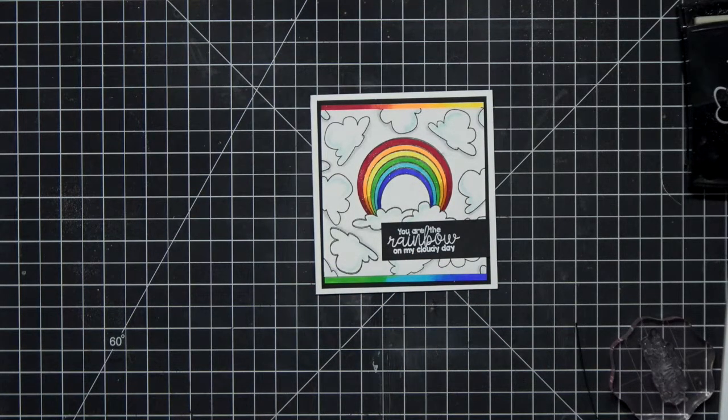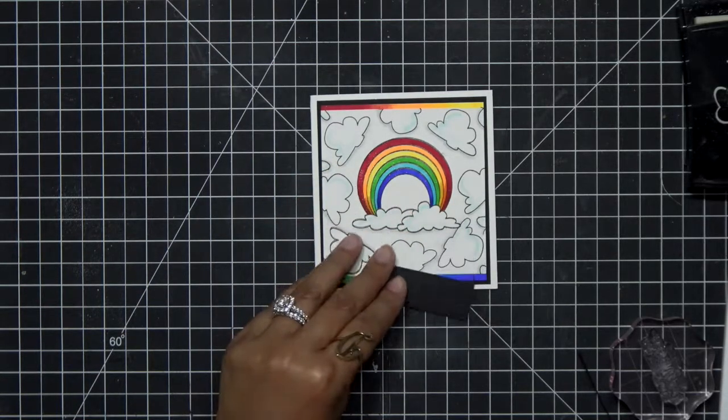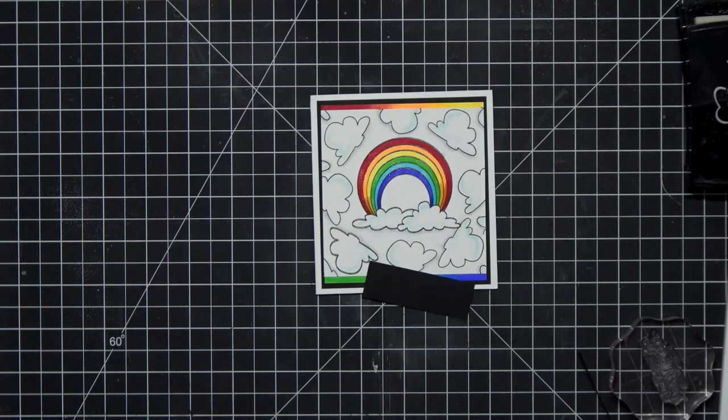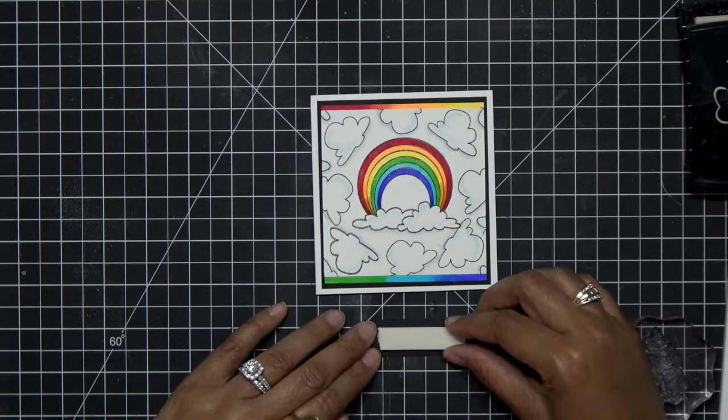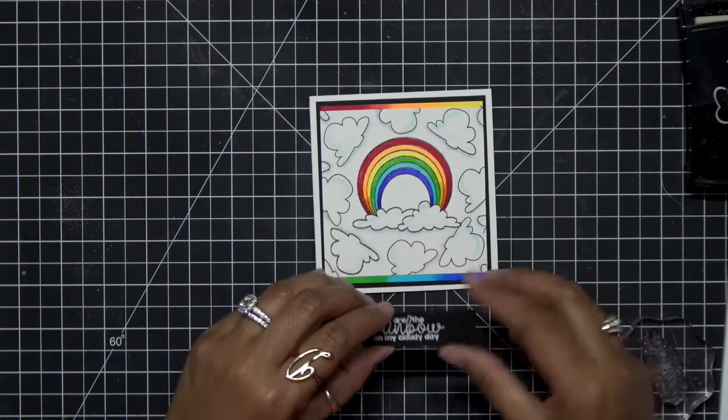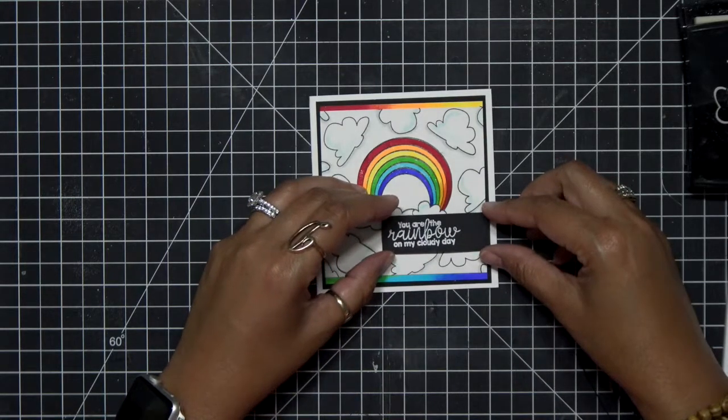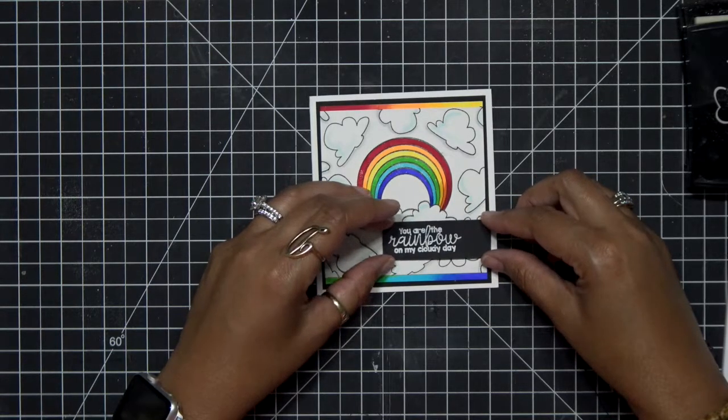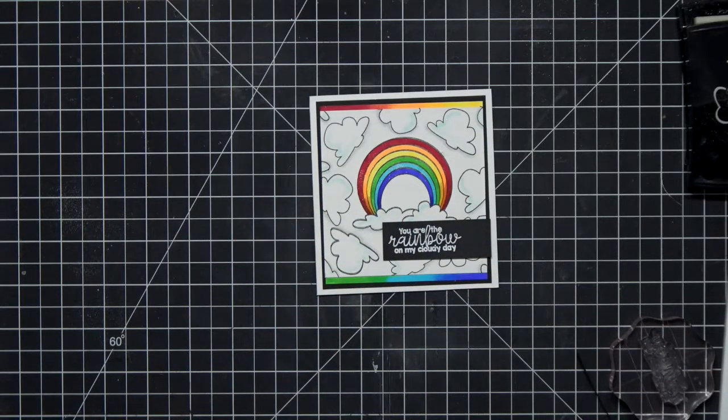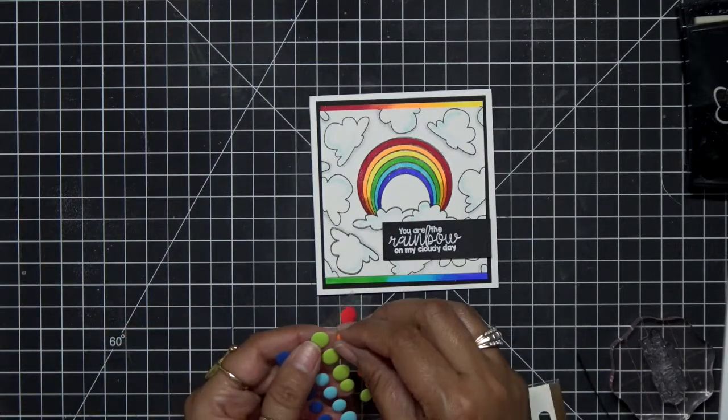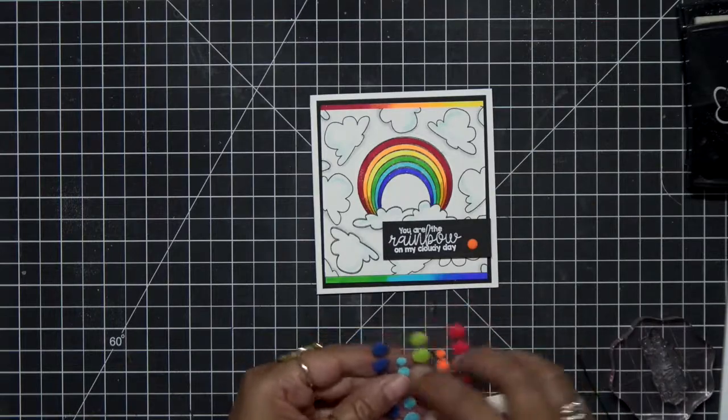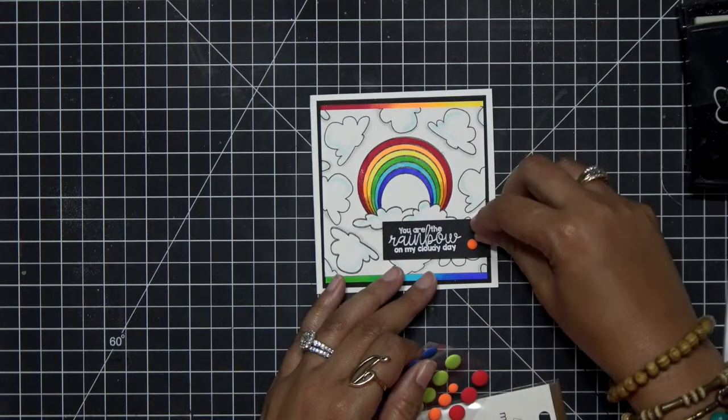I went ahead and stamped one of the sentiments from the Bright Side stamp set from Pink and Main onto some black cardstock. Again, I really love the way the black plays off with all the white and all the colors. I already had that stamped off to the side, ready for a card. And then I'm just going to use some 3M foam tape. I'll pop that right on the back. And then I'm just going to pop that down towards the lower right hand side of my card, not to cover up that gorgeous rainbow. And then just for some added color, I went ahead and grabbed out some enamel dots, matte enamel dots. And these are from Doodlebug. And the colors matched perfectly with today's card.